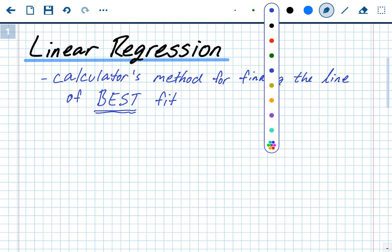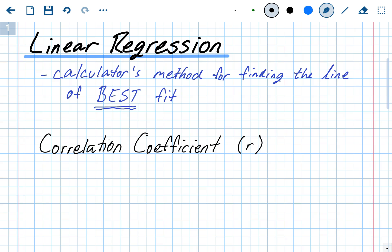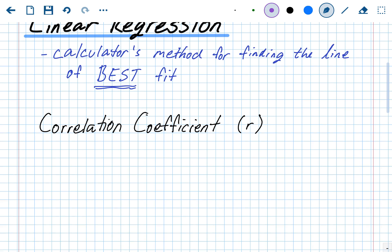There's one more thing we need to talk about: the correlation coefficient. The correlation is the relationship between the data — is it positive, negative, strong, or weak? There is a numerical value that tells us those things, called the correlation coefficient, and the variable it uses is R. Sometimes it's called the R value; it all means the same thing.